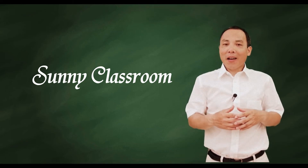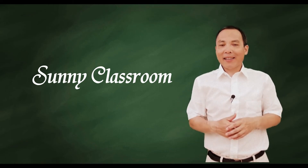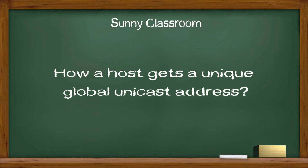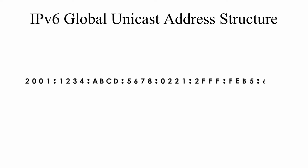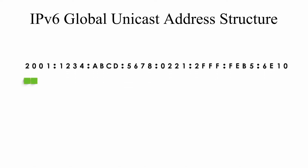Hello, and this is Sunny. Welcome back. Today my topic is how a host gets a unique global unicast address. IPv6 global unicast address is similar to IPv4 public IP address. It's used when a host wants to use the internet. Here is one example of global unicast.